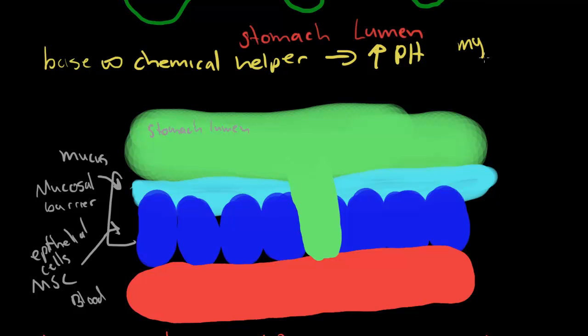What are they? They're a base with a chemical helper that increases the pH, so they're a buffer. You have things like Mylanta, which is aluminum hydroxide and magnesium hydroxide. If you're putting your Mylanta in here, it has its buffering reaction to increase the pH from say 2 to 3 to more along the lines of 3 to 4. Therefore it's not going to irritate or cause as much pain. Antacids are for symptom relief.